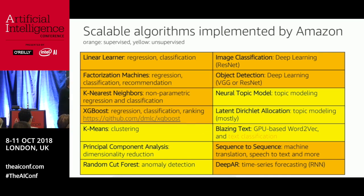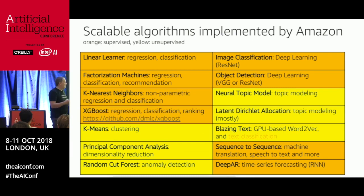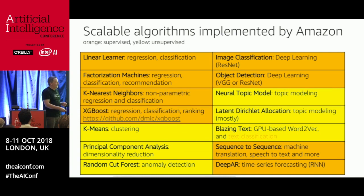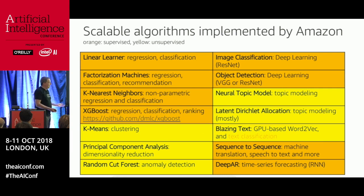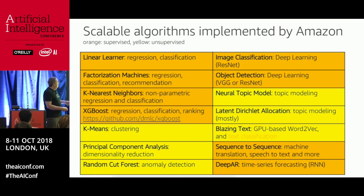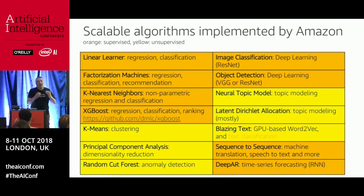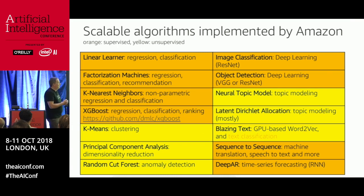Sequence2Sequence is another well-known algorithm that can be used for machine translation and other things — it's actually used by Amazon Translate. And last but not least, the fascinating one: DeepAR, a time series forecasting algorithm. That's the current list, but it might change tomorrow because we keep adding to it. When we launched we had only 10 algos; since launch we've added K-NN, BlazingText, DeepAR, and Object Detection, according to customer feedback.